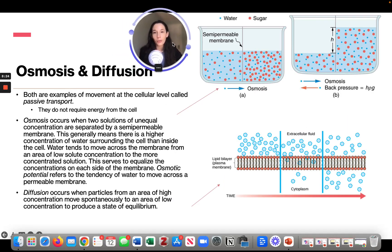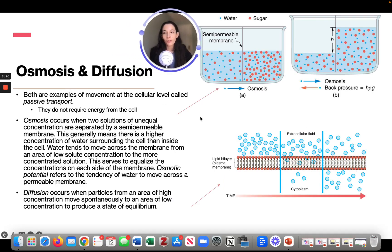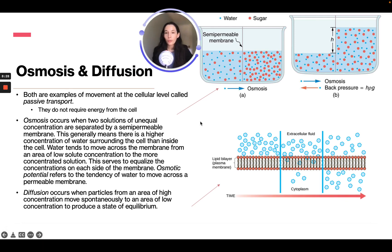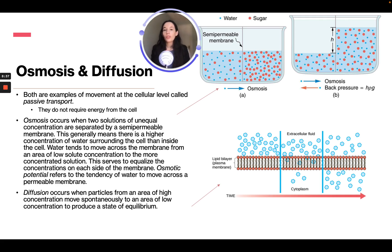Osmosis and diffusion are both examples of movement at the cellular level called passive transport — they do not require energy from the cell.